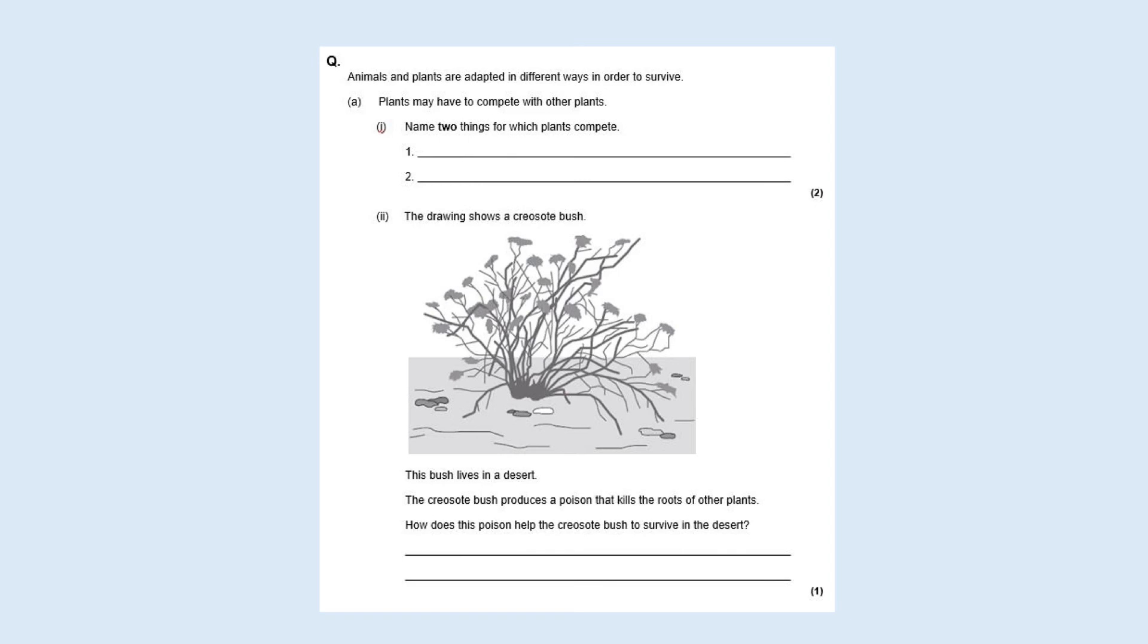Sometimes they'll give you questions where they won't just talk about plant adaptations. They might actually include other parts of other topics. This particular question was in a question related to genetics, so the genetics of creosote bushes. I've not included that part in this question but just to remind you that they can ask you, they don't just ask you on one topic. There might be several different topics related to the question.